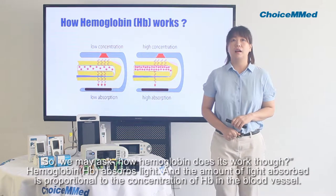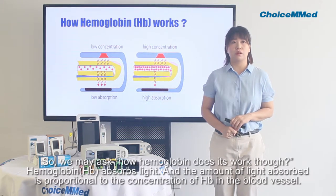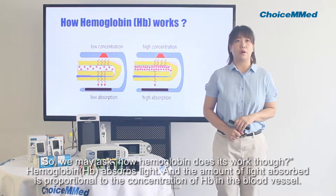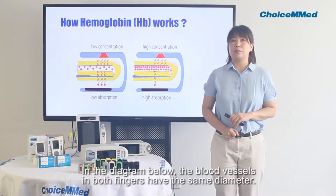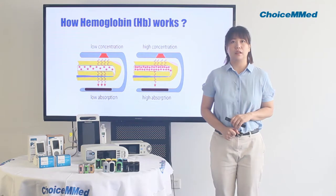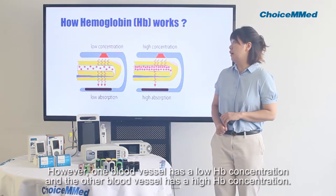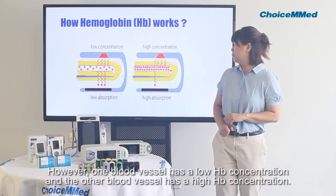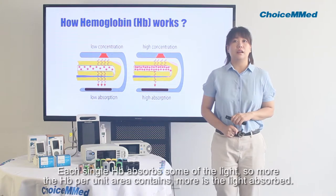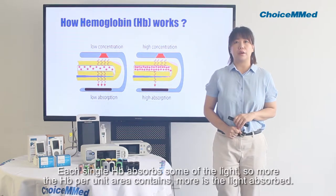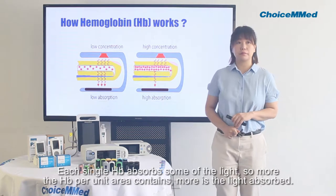So we may ask, how does it work? Hemoglobin absorbs light, and the amount of light absorbed is proportional to the concentration of hemoglobin in the blood vessel. In the diagram below, the blood vessels in both fingers have the same diameter. However, one blood vessel has a low hemoglobin concentration and the other has a high hemoglobin concentration. Each single hemoglobin molecule absorbs some of the light, so the more hemoglobin per unit area, the higher the light absorbed.